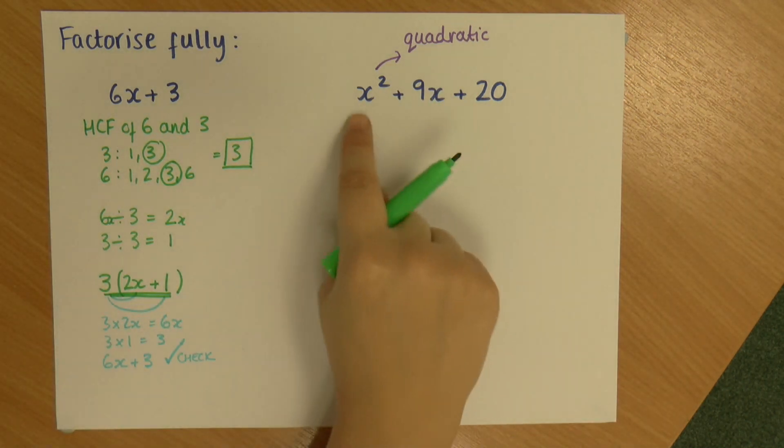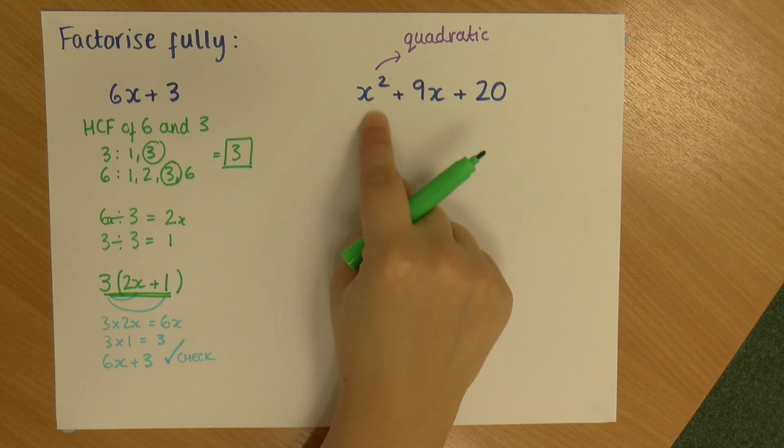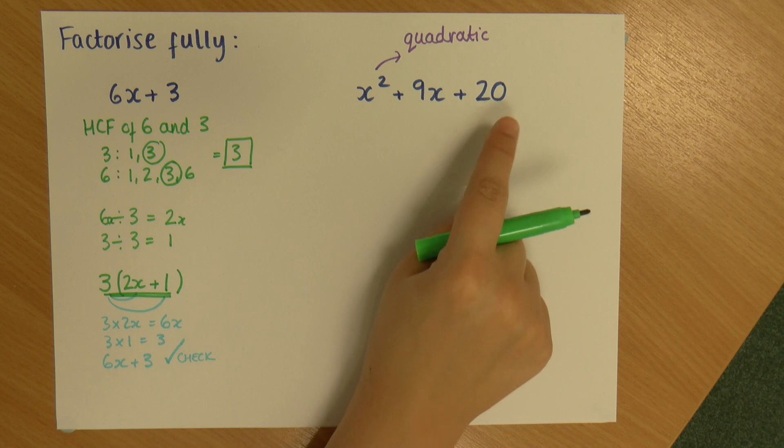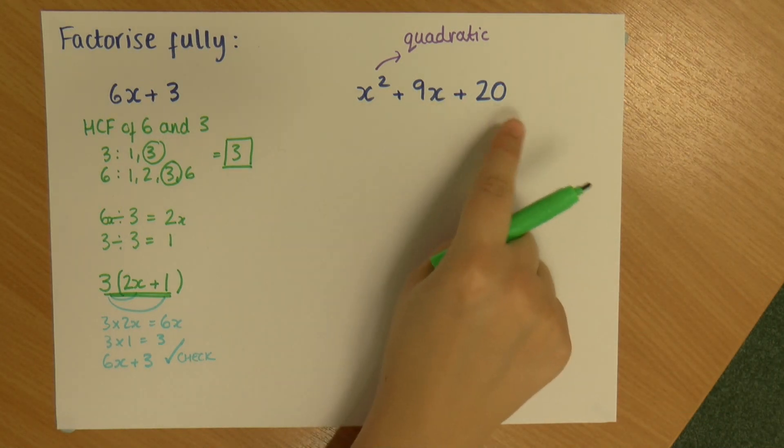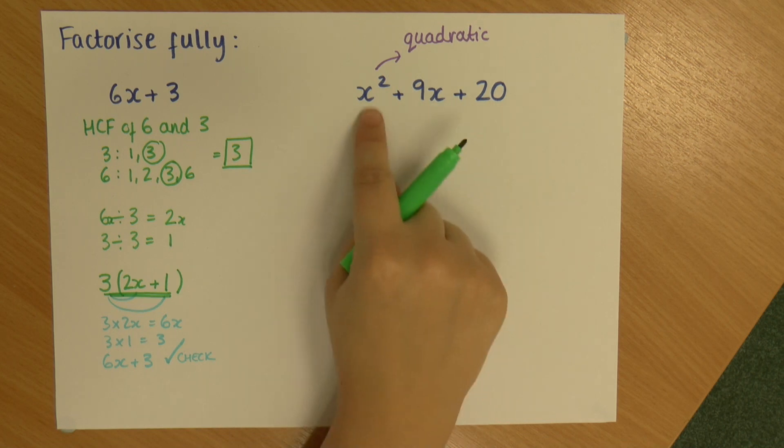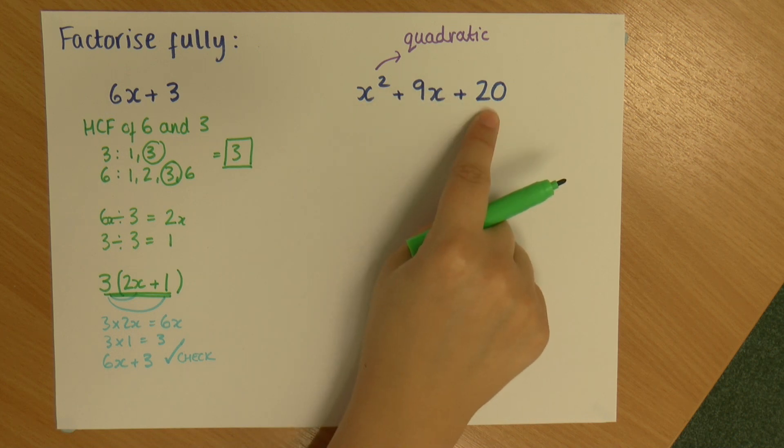So our quadratic equation is in this format where we've got an x squared, an x, and then a number with no x's. So this we go about slightly differently because these three things aren't going to have highest common factors, mainly because this first term has x's only x's and the last term has no x's. So there's no common factor.